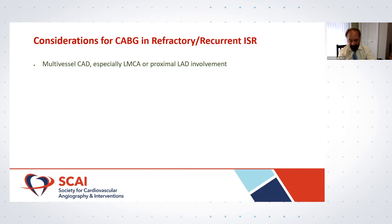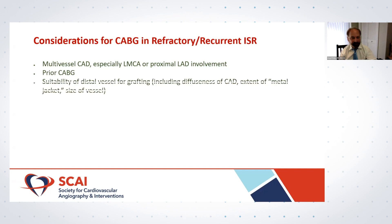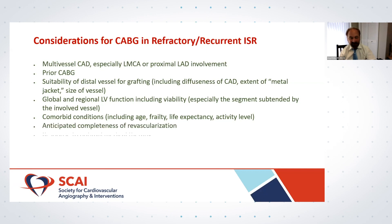Failure to address the original mechanism of restenosis underlies refractory cases. Once a stent sandwich has been created and then fails, repeat restenosis is much more likely, and a third layer of metal is almost always associated with under-expansion. Then the question of resorting to CABG arises. Variables that might have value in making this decision include multi-vessel disease, especially proximal involvement, prior CABG, suitability of the distal vessel for grafting, global and regional function including viability, comorbid conditions, and anticipated completeness of revascularization in response to optimal medical therapy.